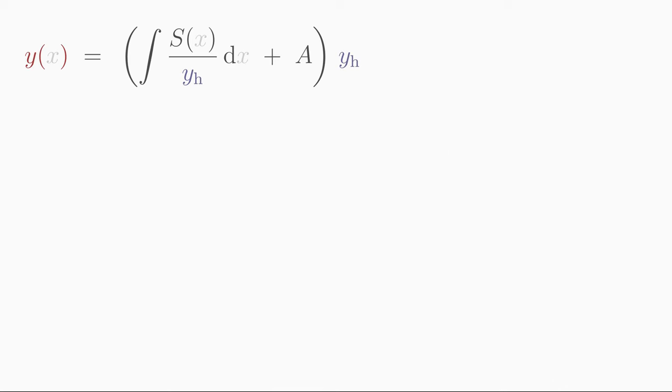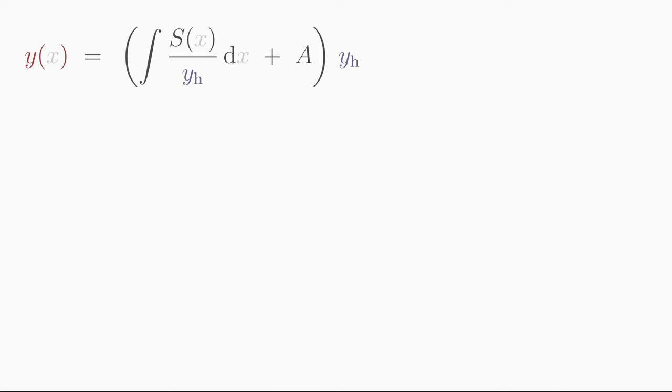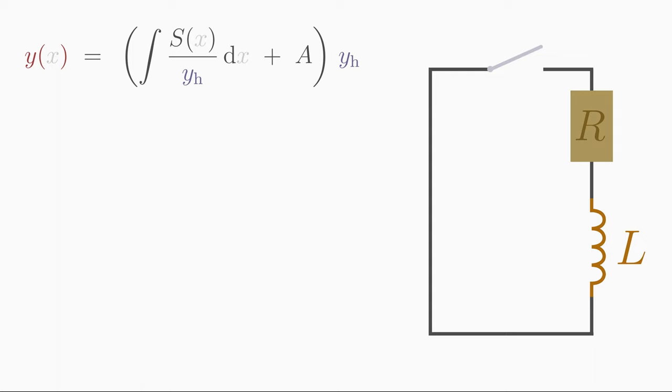Let's take an example from electrical engineering. Consider a circuit consisting of a coil characterized by the inductance L and a resistor R connected in series. Then we take a voltage source which provides a voltage U0 as soon as we close the circuit with a switch.